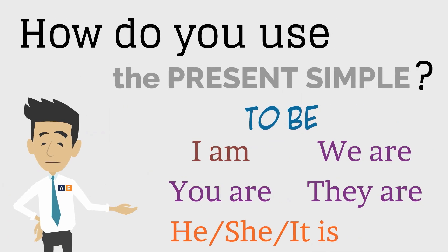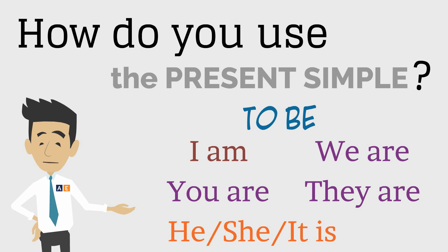For the verb "to be," write: I am, you are, he, she, it is, we are, they are.